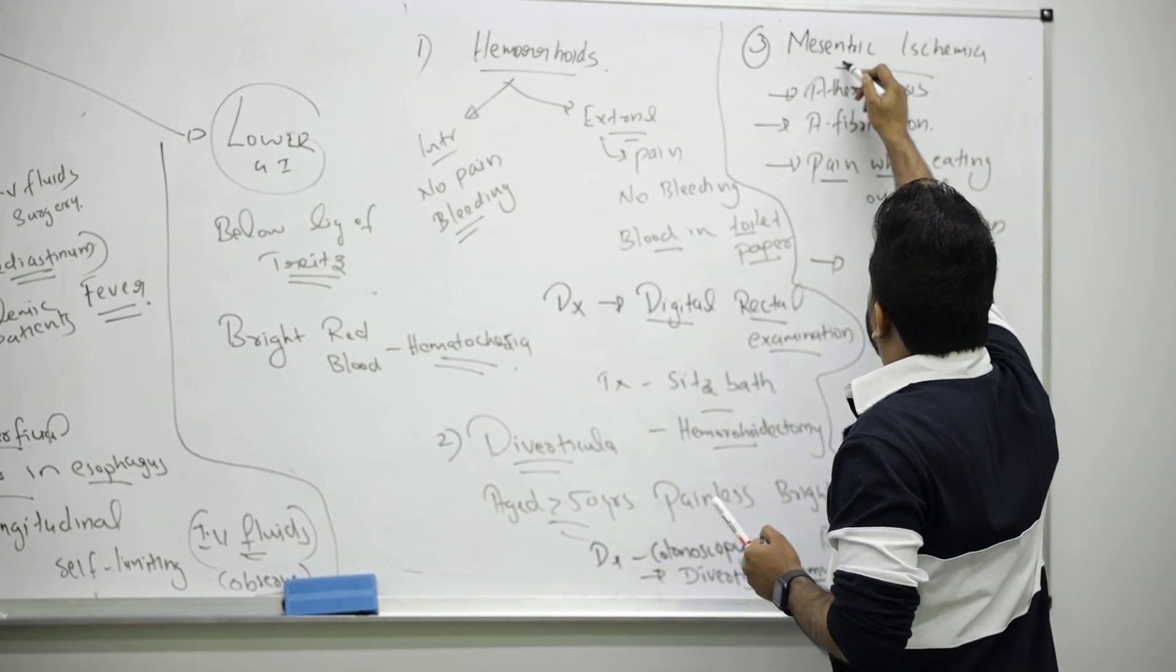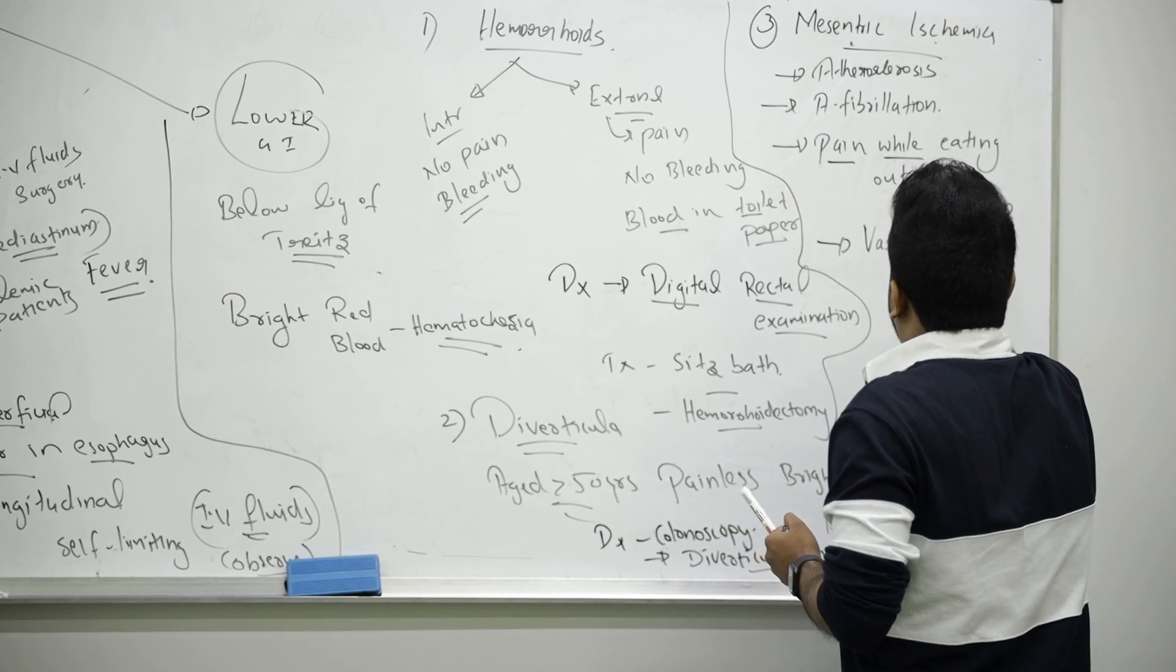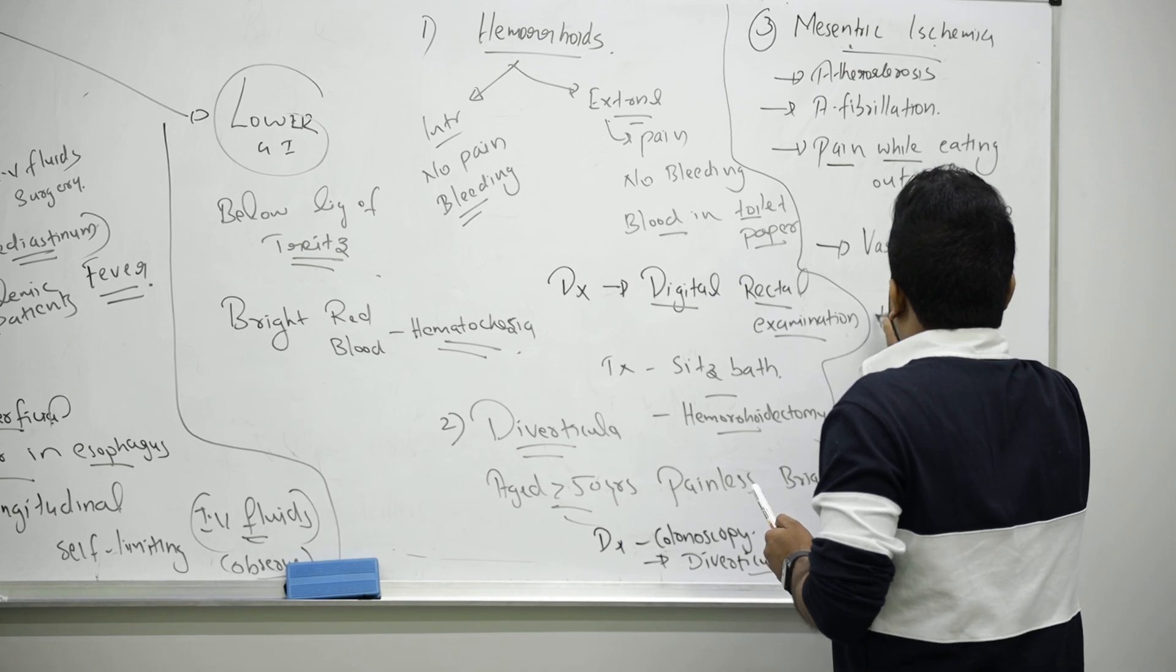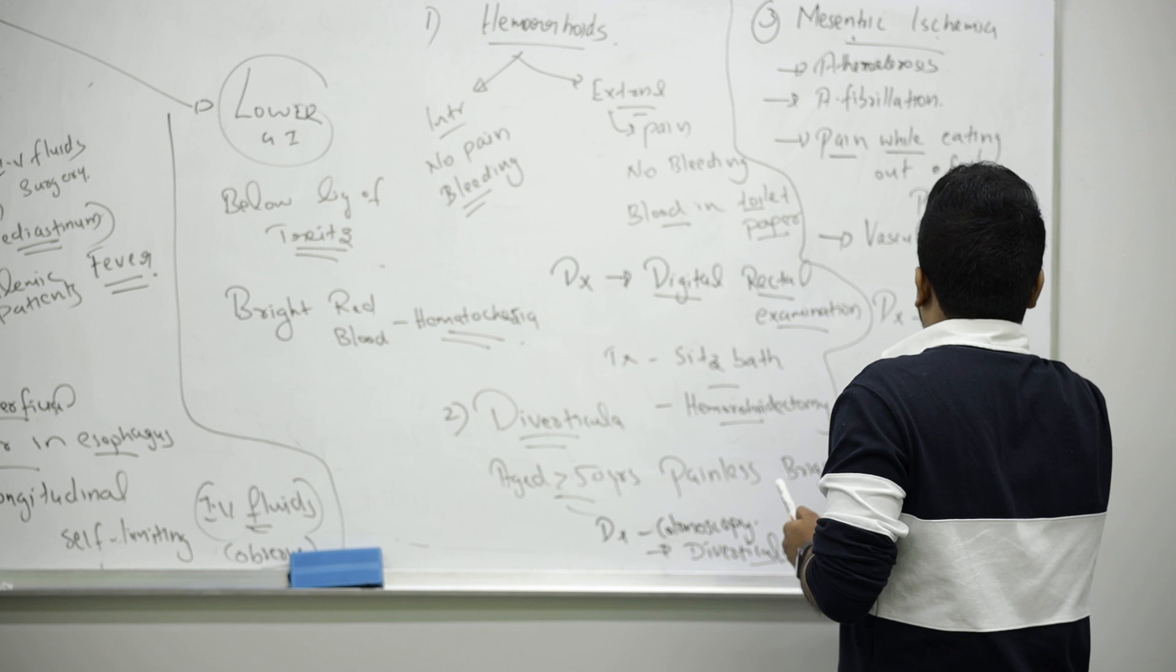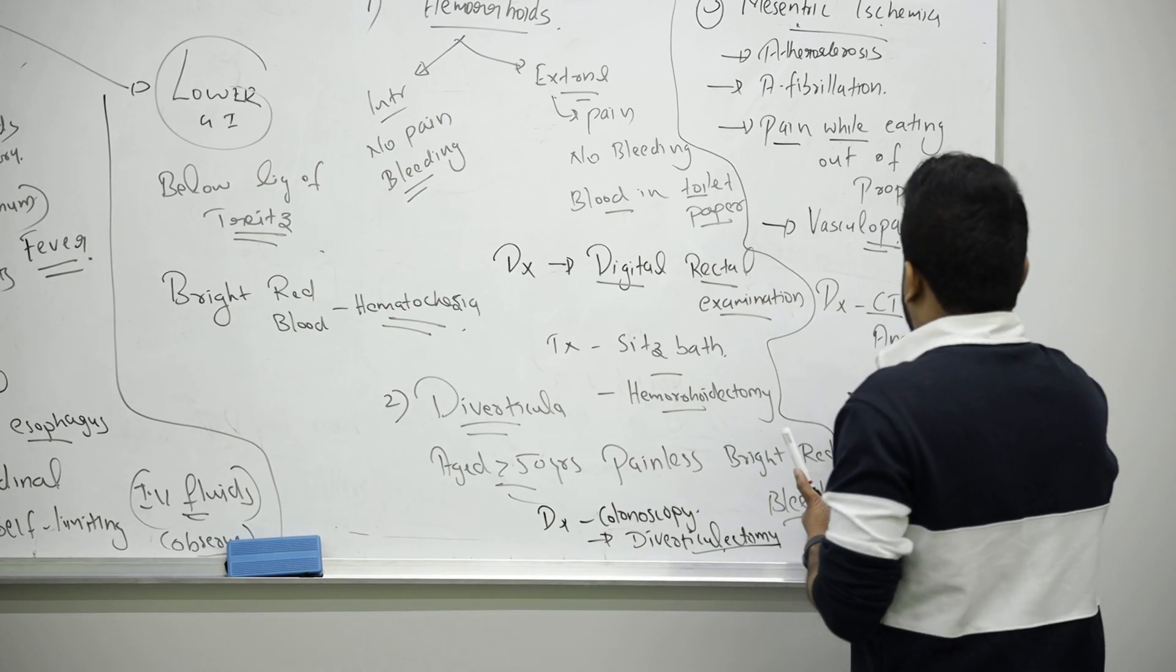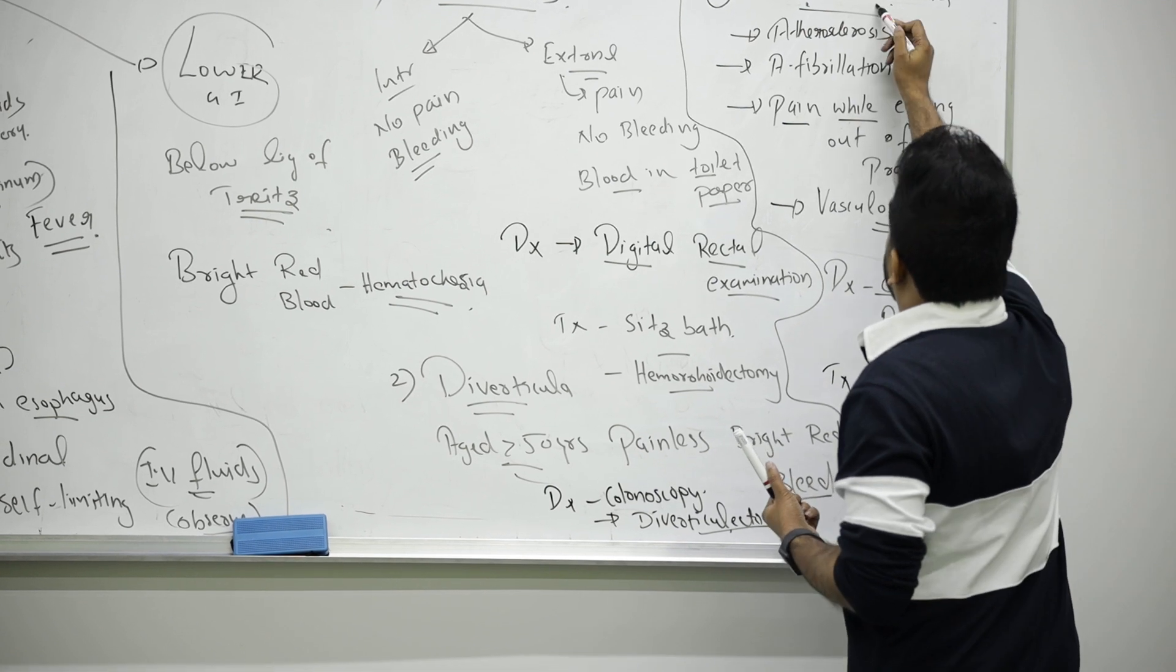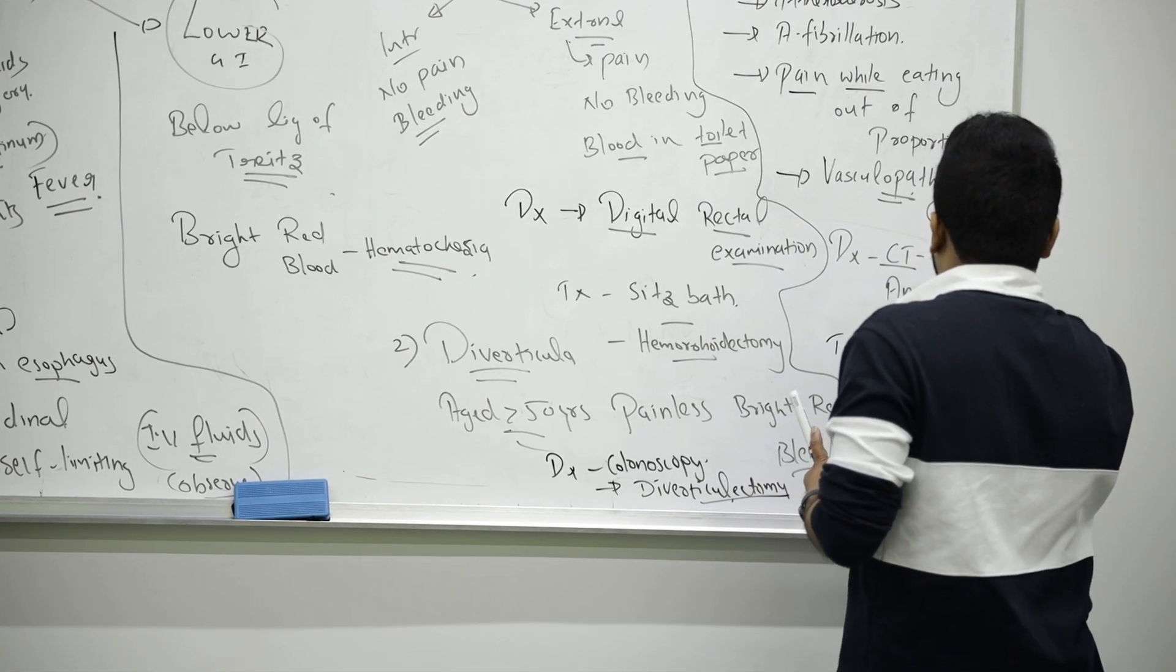Mesenteric arteries are affected. For diagnosis, we do CT angiography. There is ischemia, no blood, so we have to do revascularization to reduce the pain.